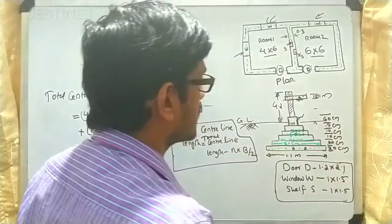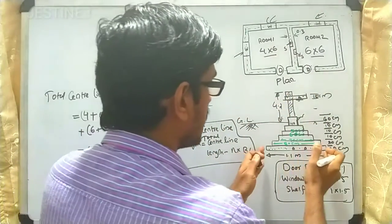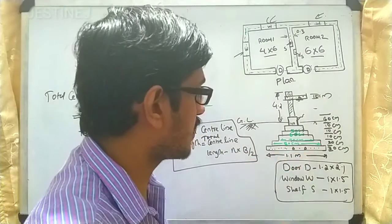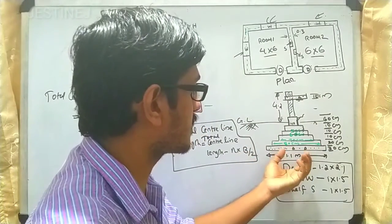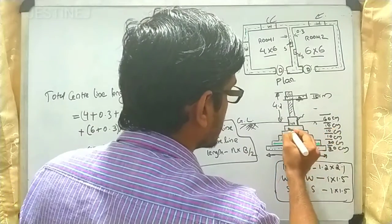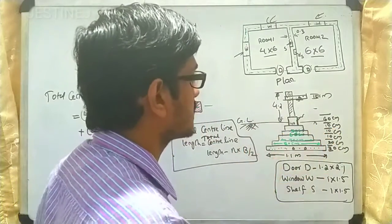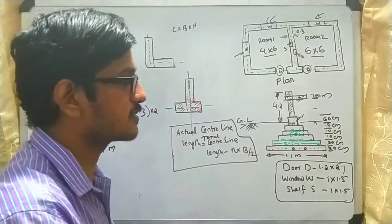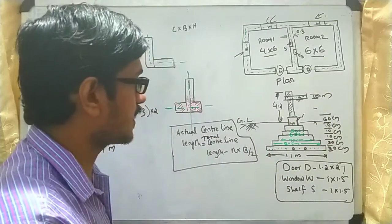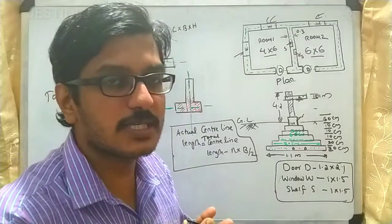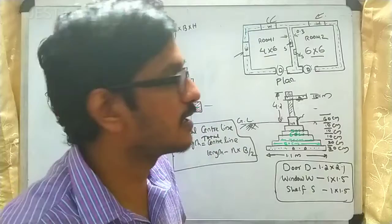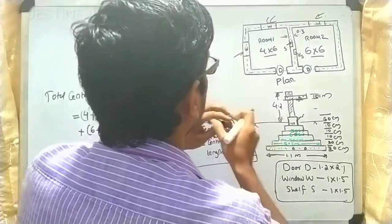Regarding the section, at the bottom there is PCC with dimensions of 1.1 meter, and foundation footings are also shown. We will discuss all these details in the coming portions. First, our intention is to determine the total centerline length, for which we will draw an imaginary line through the wall.